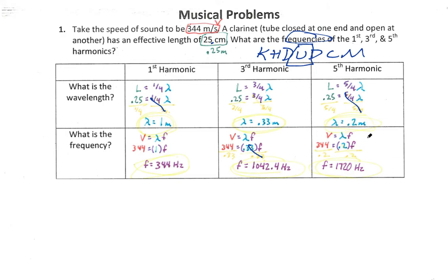Again, using the wave formula, v equals lambda f. 344 meters per second is the speed of sound through air. We've solved that our wavelength is 0.2 meters. Go ahead and get frequency by itself. Divide both sides by 0.2 or multiply by five because 0.2 is one-fifth. Any of those methods would work to get frequency by itself, which we're left with a frequency of 1,720 hertz.